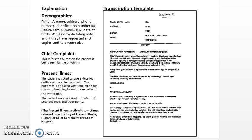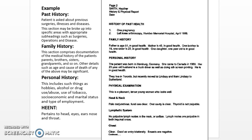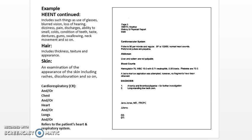Here's an explanation of each of the headings and subheadings. You see demographics, chief complaint, present illness, past history, family history, personal history. HEENT pertains to head, eyes, ears, nose, and throat. They will also include hair, skin, and as you can see some of the other subheadings: chest, heart, lungs.